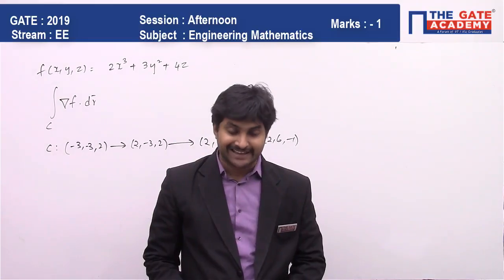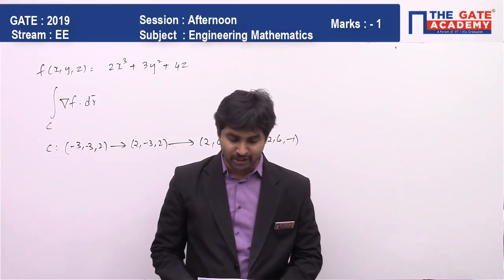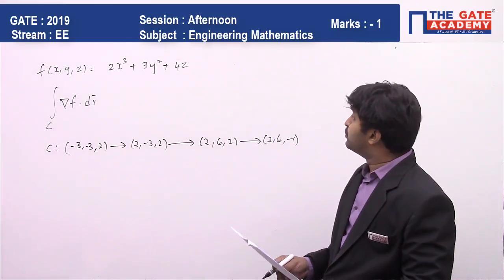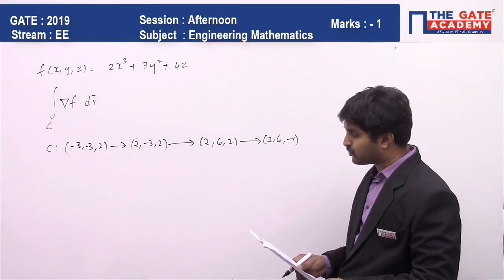First of all, let me read the question. The scalar function f(x, y, z) is equal to 2x³ + 3y² + 4z.